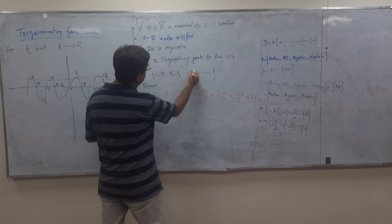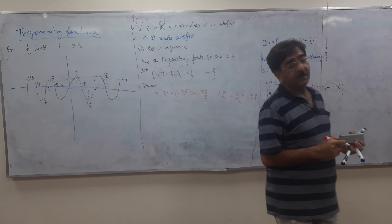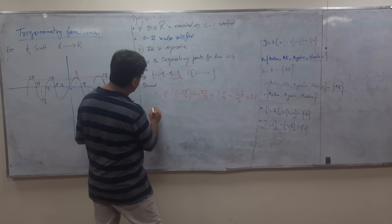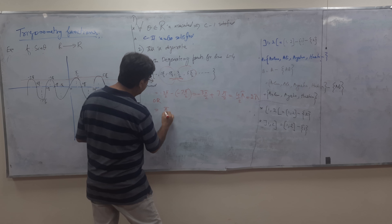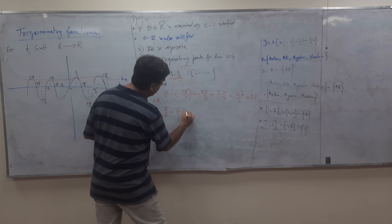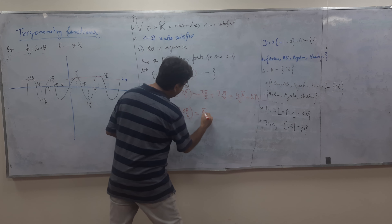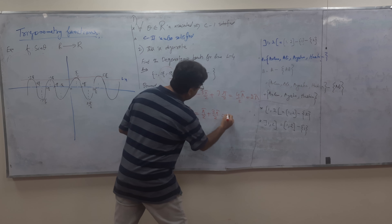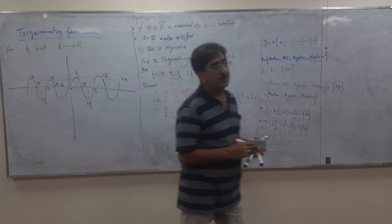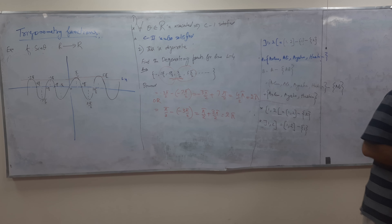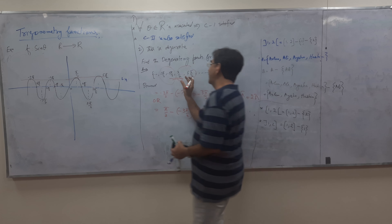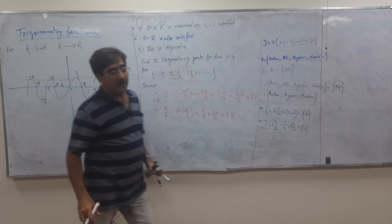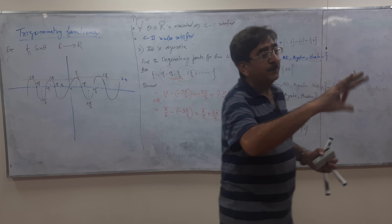You may consider any pair of degenerate points on L4, because every degenerate point on L4 is a periodic point. So we can consider any two points. The period will always remain 2pi.